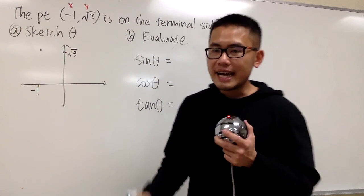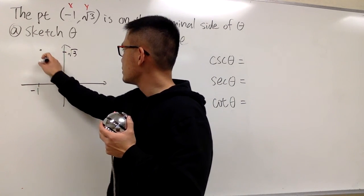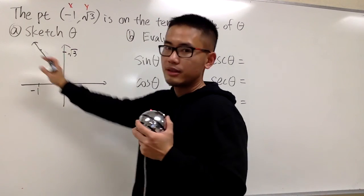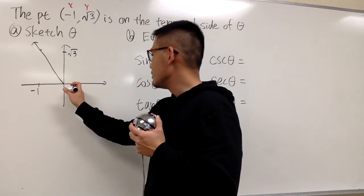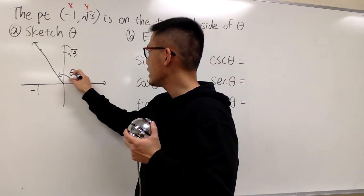For the terminal side, we go from the origin, and we draw a ray passed through this point, and that's the terminal side. And we know the angle theta will go from here to here, and let me indicate that right here for you guys.